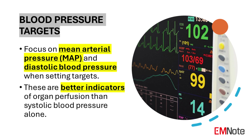Blood Pressure Targets. When initiating vasopressor therapy, it's crucial to establish appropriate blood pressure targets. While systolic blood pressure is important, the focus should be on mean arterial pressure (MAP) and diastolic blood pressure. MAP represents the average pressure in the arteries during one cardiac cycle and is a more reliable indicator of organ perfusion. Diastolic blood pressure, representing the pressure when the heart is at rest, is particularly important for coronary perfusion. By targeting these parameters, clinicians can ensure more effective organ perfusion and better patient outcomes.